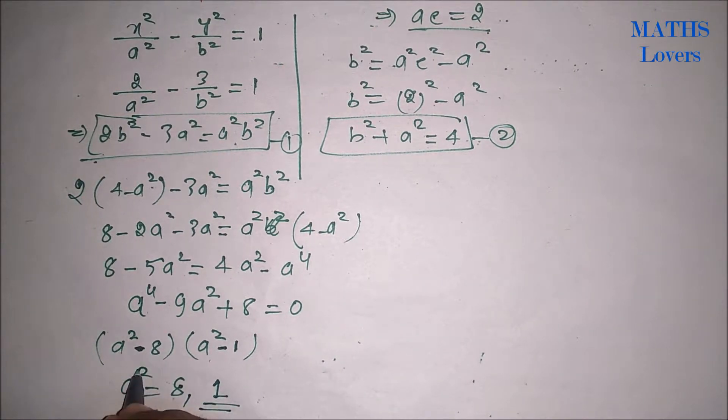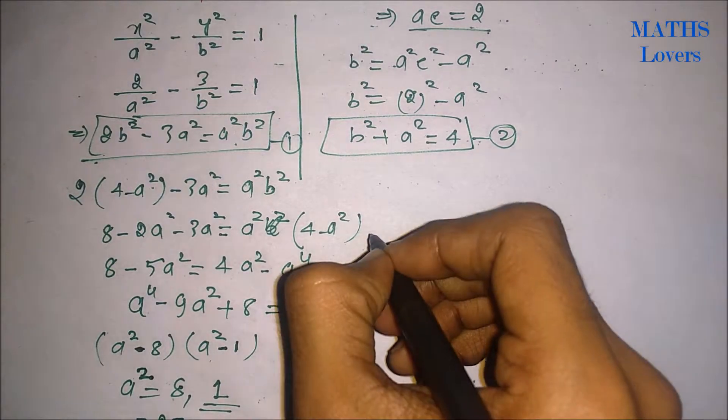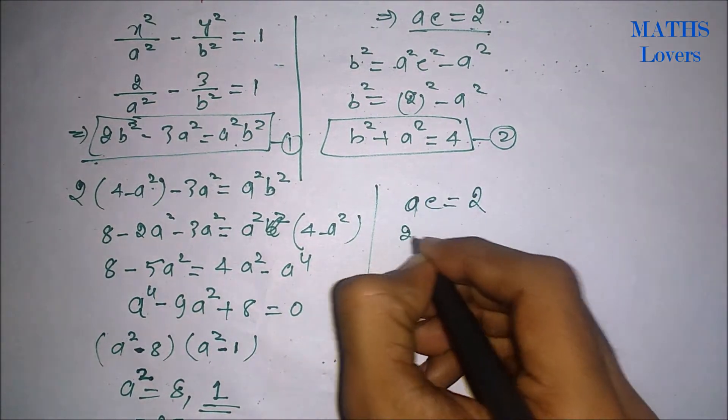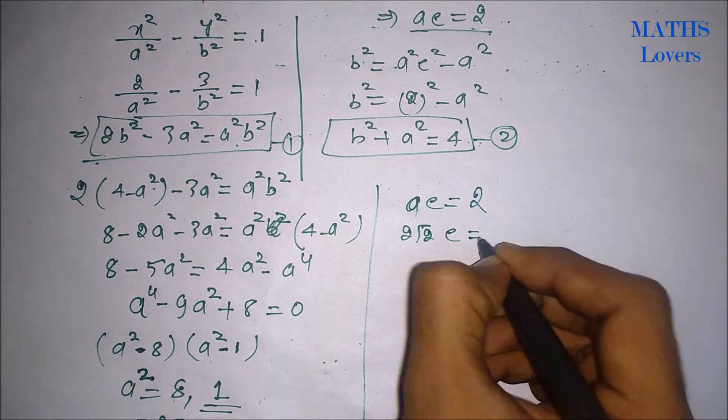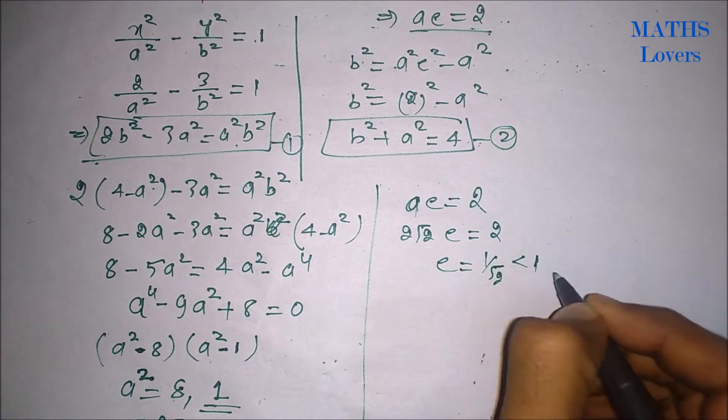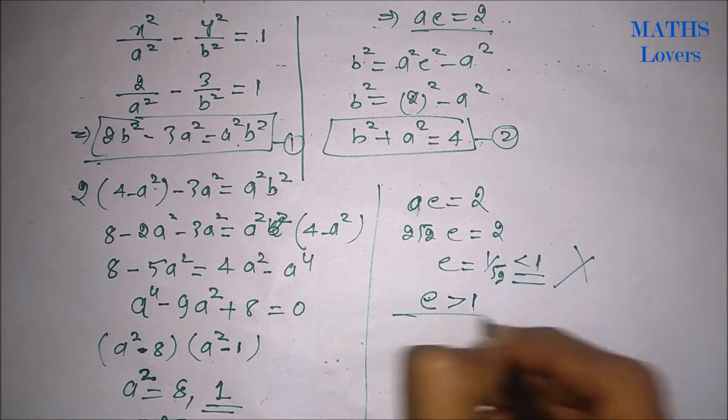If a² = 8, then a will be approximately 2√2. We know that ae is 2, so if a is 2√2, then e will be 1/√2. That is less than 1, which cannot be possible because in hyperbola, eccentricity is always greater than 1.